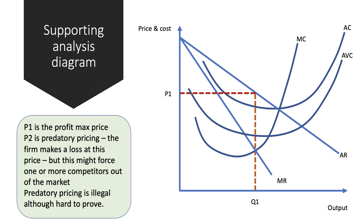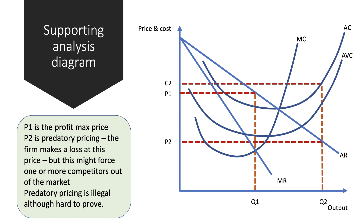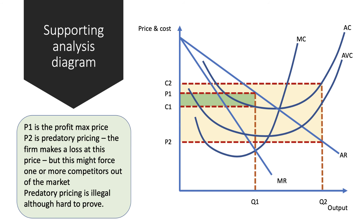Here's the diagram: P1 is the normal profit-maximizing price. P2 is the predatory price — a very low price, even below this firm's average variable costs. The profit the firm was making beforehand is shown by the green shaded area. If they slash prices from P1 to P2, they now make a loss equal to the yellow area. But the aim of course is to drive a rival out of the market so they can go back to charging P1, or maybe even higher, in the long term.